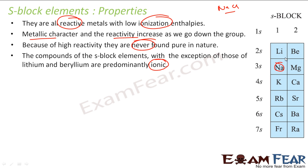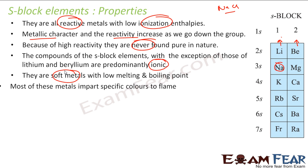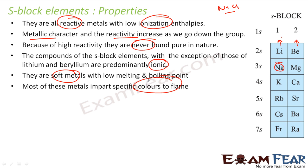They are predominantly ionic. Group 1 elements have one electron in the outermost shell, and group 2 elements have two electrons. They can easily give one or two electrons respectively, so they are generally ionic because they don't share electrons — they give them away. They are soft metals with low melting and boiling points, and most of these metals impart color to the flame.